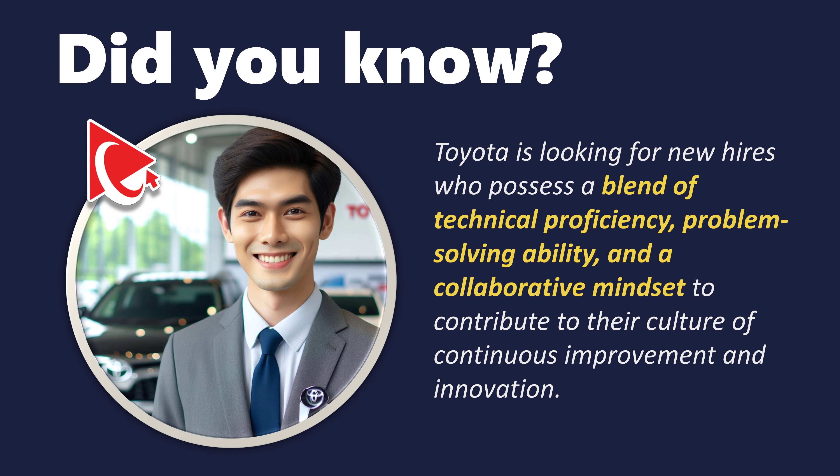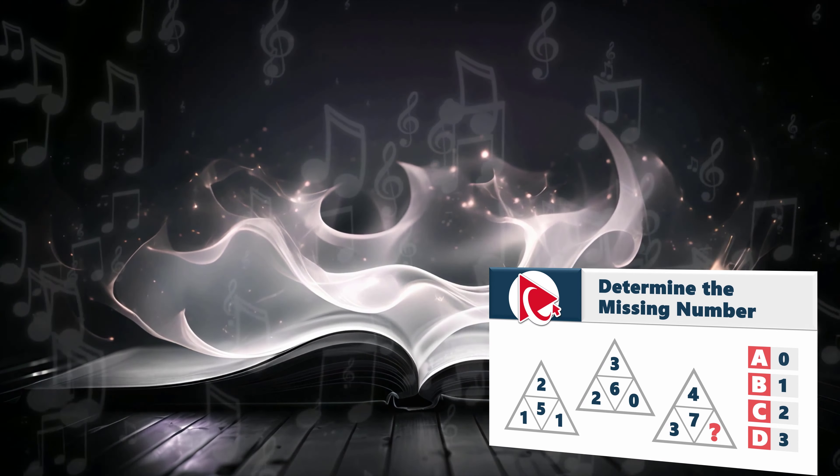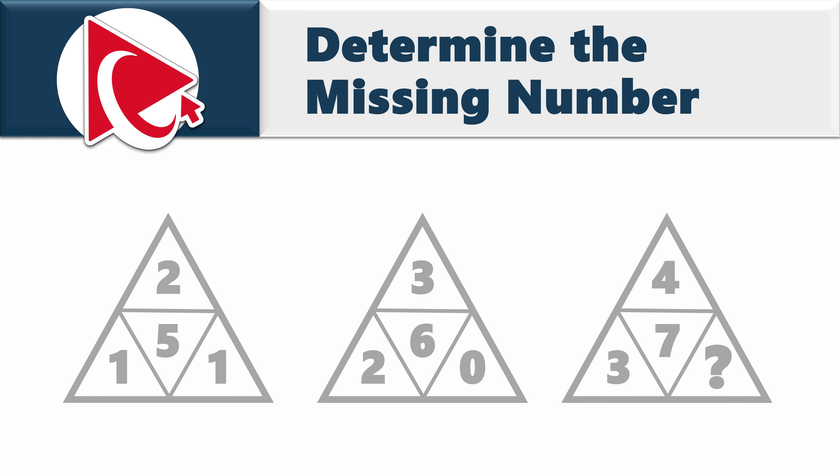You are not just about to answer this amazing question. You are about to conduct a symphony of knowledge. You are presented with three triangles. Each triangle has four numbers inside. The numbers across three triangles are 2, 3, and 4, then 5, 6, and 7. And then at the bottom, each triangle also has numbers: 1, 1, 2, 0, 3, and then comes the missing number, which you need to select out of four possible choices: A 0, B 1, C 2, and D 3.